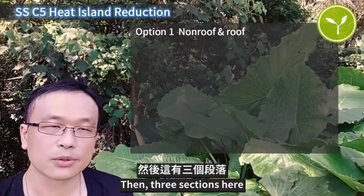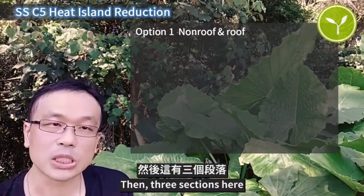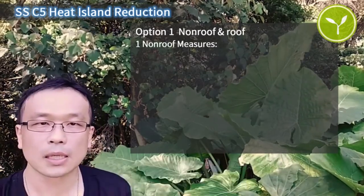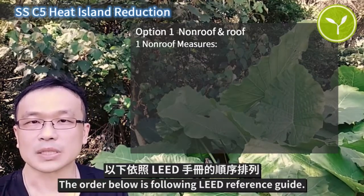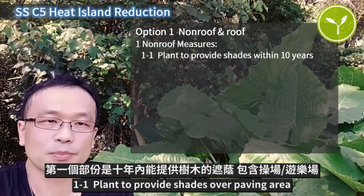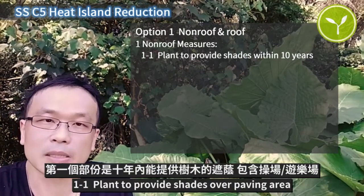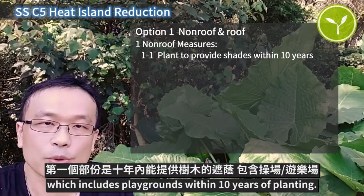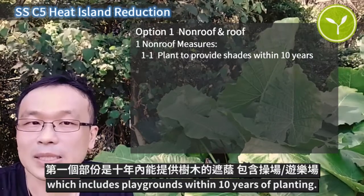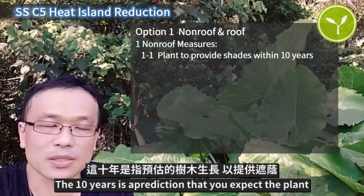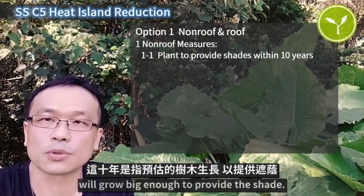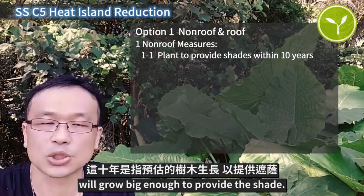There are three sections. First is non-roof measures. The order below follows the LEED reference guide. 1-1: plants to provide shade over paving areas, which includes playgrounds. Within 10 years of planting — the 10 years is a prediction that you expect the plant will grow big enough to provide the shade.